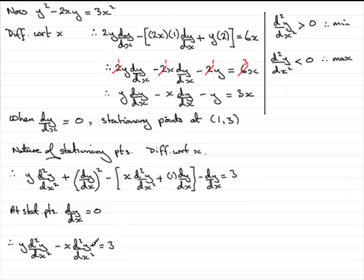So, what we need to do now is just factorize the left-hand side. If we factorize the left-hand side, we've got y minus x multiplied by d²y/dx squared. And that equals 3. So, if we divide both sides by y minus x, d²y/dx squared equals 3 over y minus x.